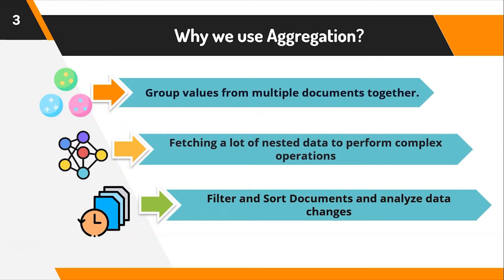So if there is a complex operation needed for the data present in the documents, you need aggregation. Finally, it filters and sorts documents and analyzes data changes. MongoDB being a NoSQL database, the data model will frequently change as the data being inserted into the database might change over time. So in order to analyze this unstructured data, it becomes quite important to make proper filtration and sorting of these documents to get proper insights for your business requirements. Aggregation can be quite useful as it simplifies the complexity of the query and fetches the data in no time.